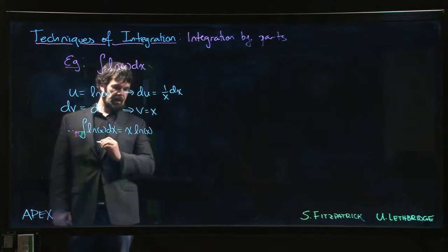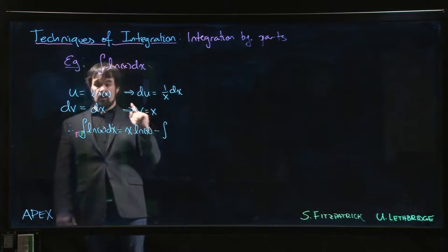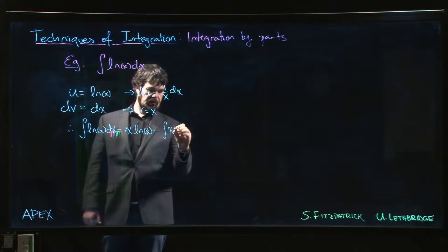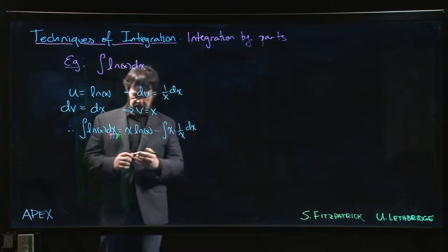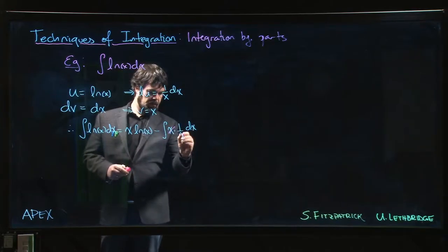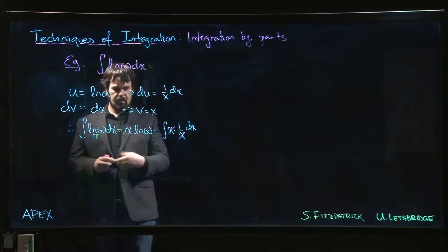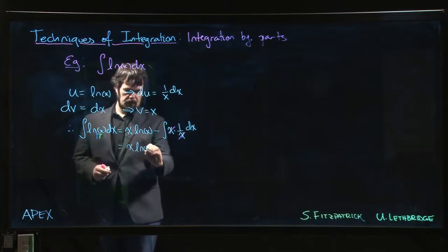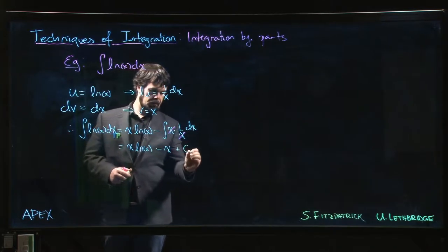X times the log of X minus the integral of v du. And here we see how this works out: v is X, du is 1 over X times dx, so those X's cancel, leaving you with the antiderivative of 1. We definitely know how to do that. We get X times log X minus X plus C.